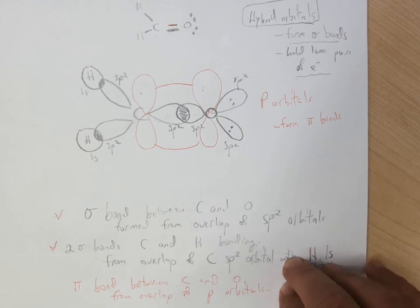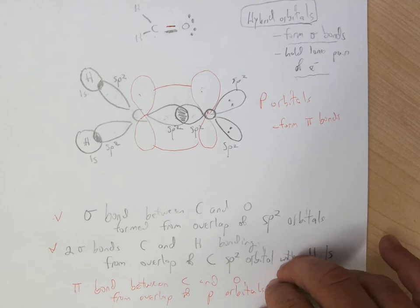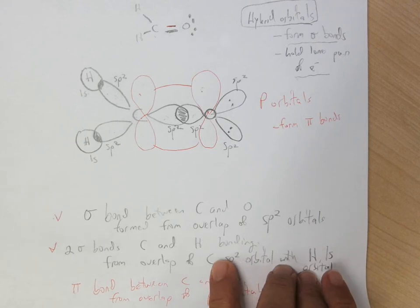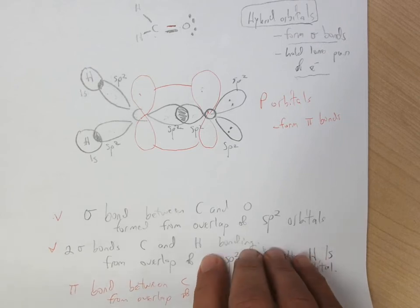If you're taking an organic class, you probably have a textbook that has amazing drawings, and what I would recommend is you look through different types of bonding that you'll see, single, double, and triple are different types of bonding, and see how those are formed from the hybrids.